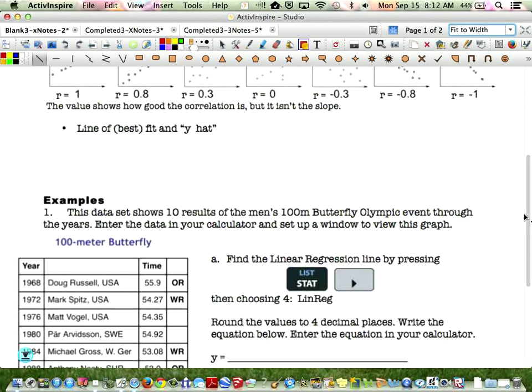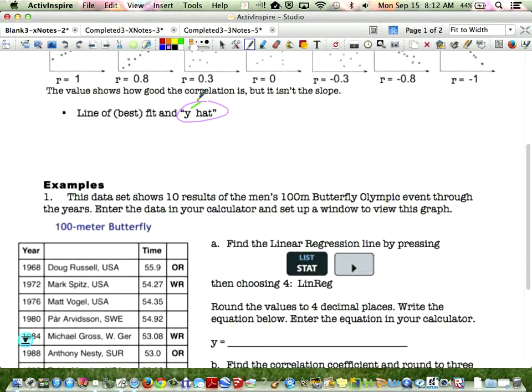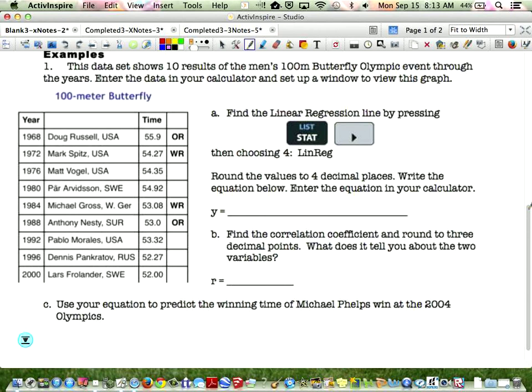For line of best fit, y hat, we can let the calculator do some of the work for us. We don't have to do it by hand like we did in 3.3. We're just going to enter some of this information into our calculator. If you have a calculator here today, grab it.